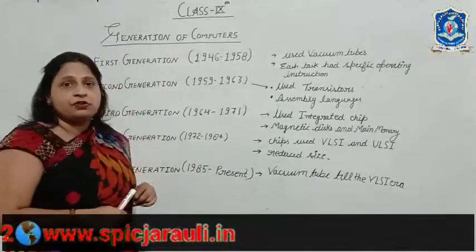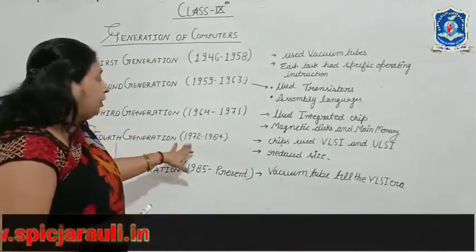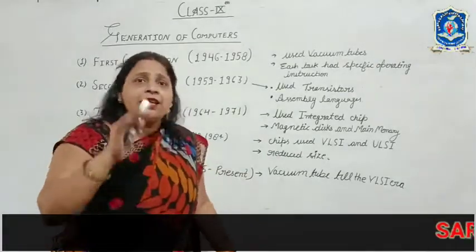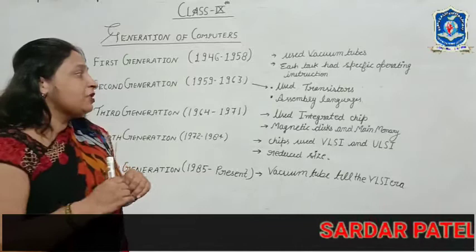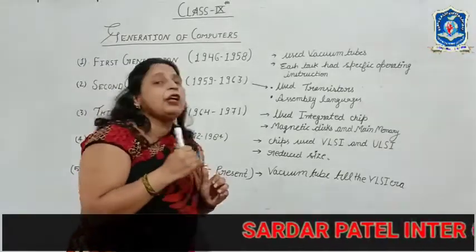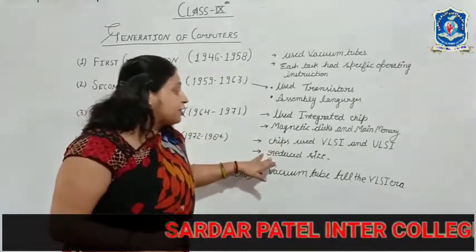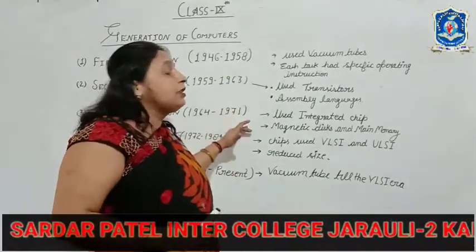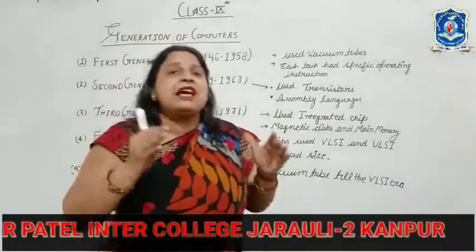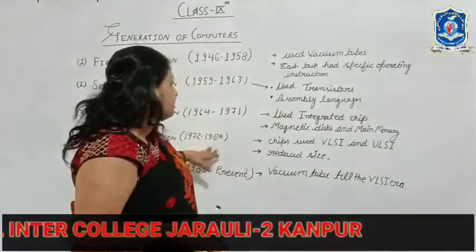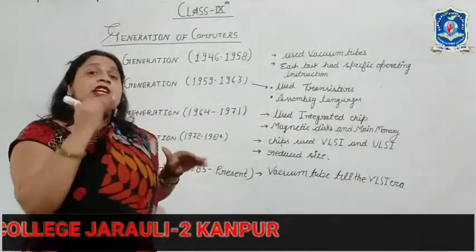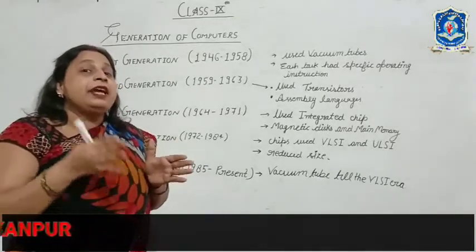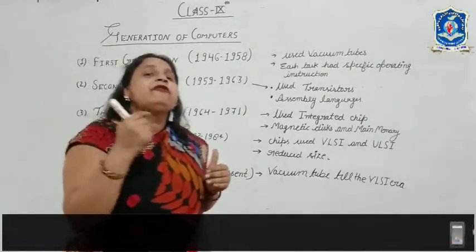Now the 4th generation, which ran from 1972 to 1984. In this generation, chips were also used — for example, VLSI and ULSI sizes. Compared to the 1st and 2nd generations, the size of computers in the 4th generation became much smaller, and the speed became very fast.